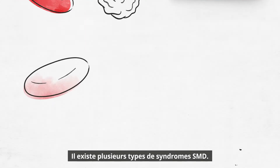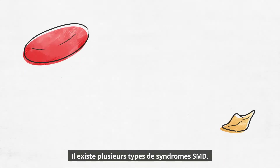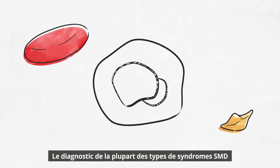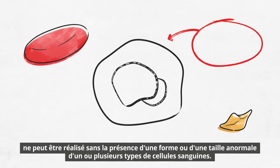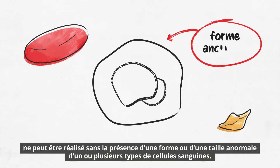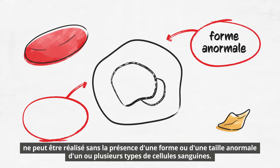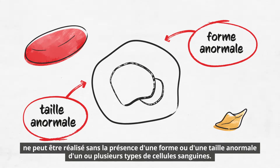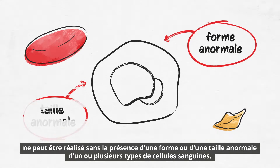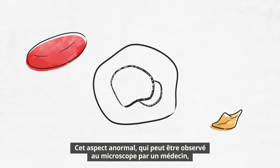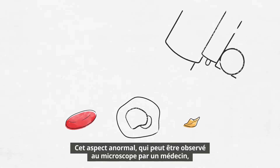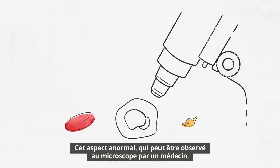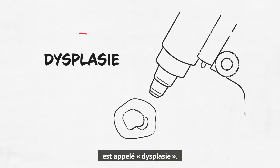There are several types of MDS. The diagnosis of most types of MDS requires the presence of abnormal shape or size of one or more blood cell types. This abnormal appearance, which can be seen by a doctor under a microscope, is called dysplasia.